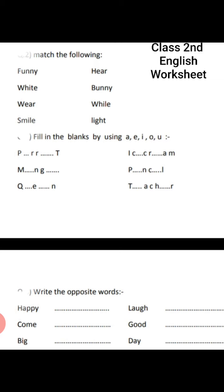Next question: Write the opposite word. Opposite word means what is the opposite of — happy: sad; come: go; big: small; laugh: cry; good: bad; day: night.